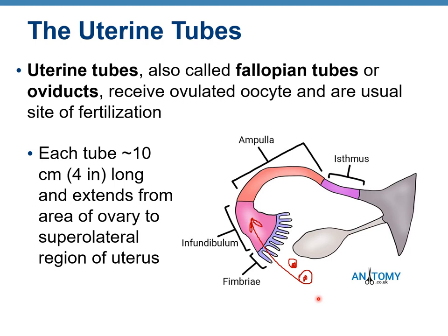If the oocyte stays in the peritoneal cavity it will likely be resorbed, though sometimes it can result in an ectopic pregnancy. The most common ectopic pregnancies occur inside the tube, but rarely pregnancy can occur inside the abdominal cavity. The key point is that ovaries and uterine tubes are not physically connected with one another.